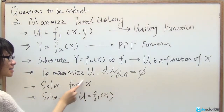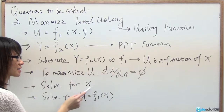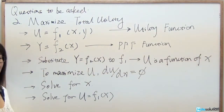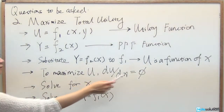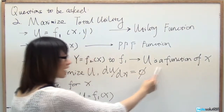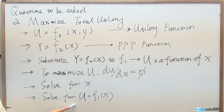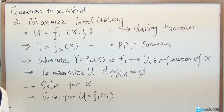The value of X solved here is the amount of X that maximizes total utility. Substituting that X back into the functions gives you the total utility and the corresponding values of X and Y.